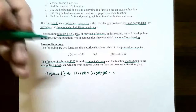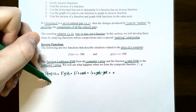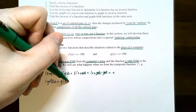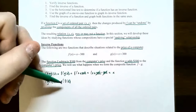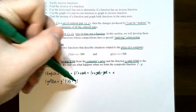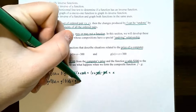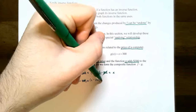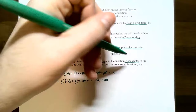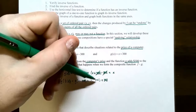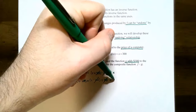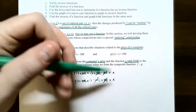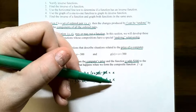Now let's see what happens if you reverse the order and put g on the outside with f on the inside. We saw in the previous video this is not necessarily the same function. This time it's g composed with f of x, where f of x is replaced with x minus 300 as the inside function. You get x minus 300, then add 300. The minus 300 cancels with the plus 300, so you just get x back.